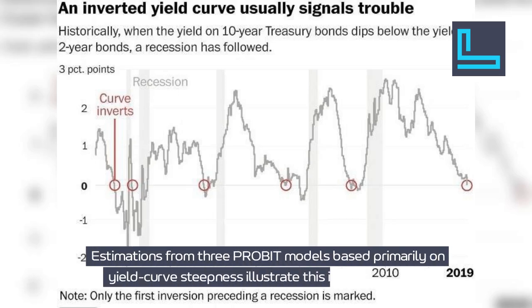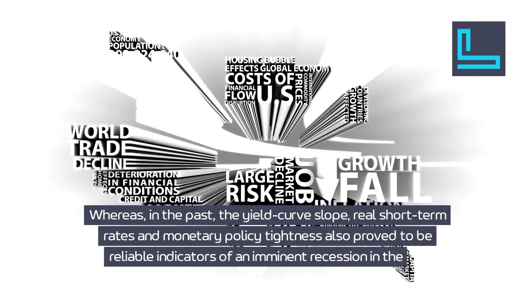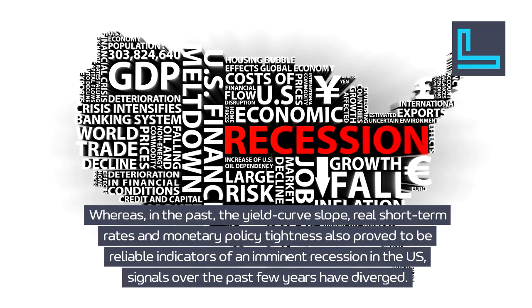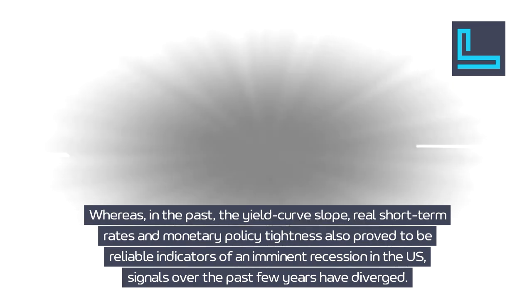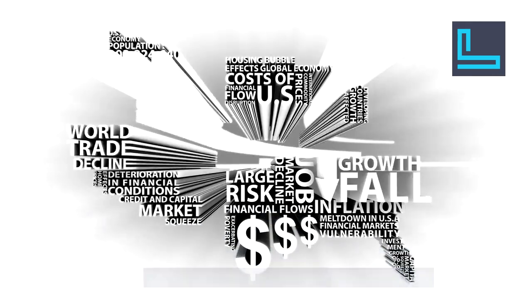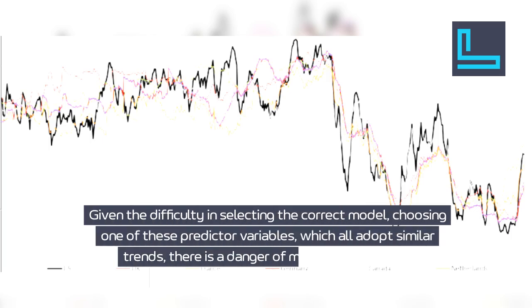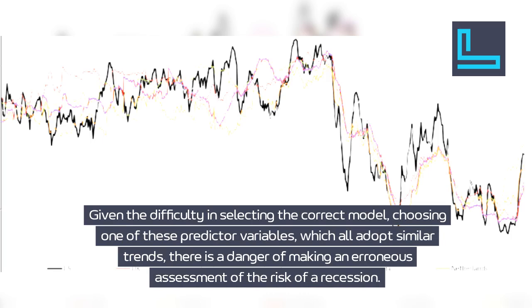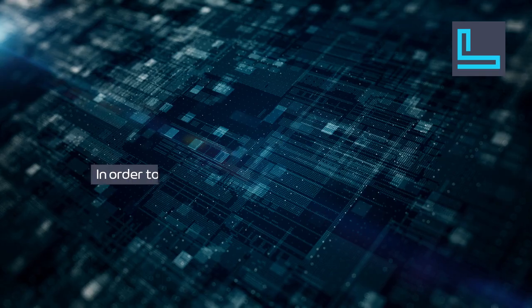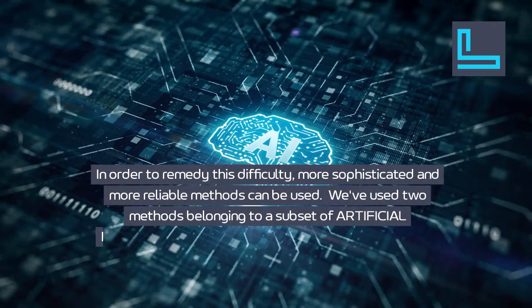Estimations from three probit models based primarily on yield curve steepness illustrate this inherent default. Whereas in the past the yield curve slope, real short-term rates, and monetary policy tightness proved to be reliable indicators of an imminent recession in the U.S., signals over the past few years have diverged. Given the difficulty in selecting the correct model, choosing one of these predictor variables — which all adopt similar trends — creates a danger of making an erroneous assessment of the risk of a recession.